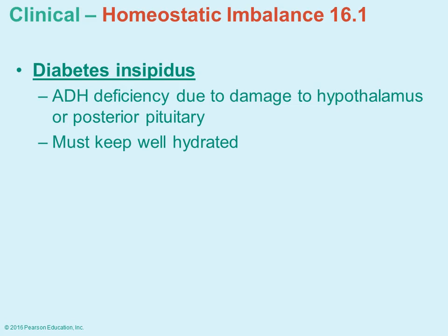Diabetes insipidus is a hormonal disorder characterized by a deficiency of ADH, which may result from damage to the hypothalamus or posterior pituitary. Without enough ADH, the body has difficulty remaining hydrated because there is no signal telling the kidneys to stop releasing so much water in the urine. Individuals with diabetes insipidus tend to urinate very frequently, and the danger is they can become dehydrated very quickly.